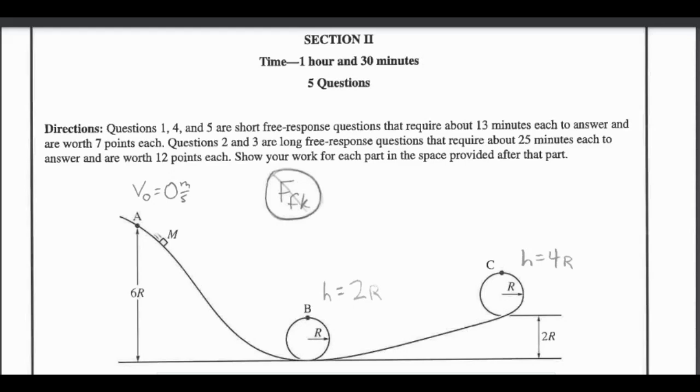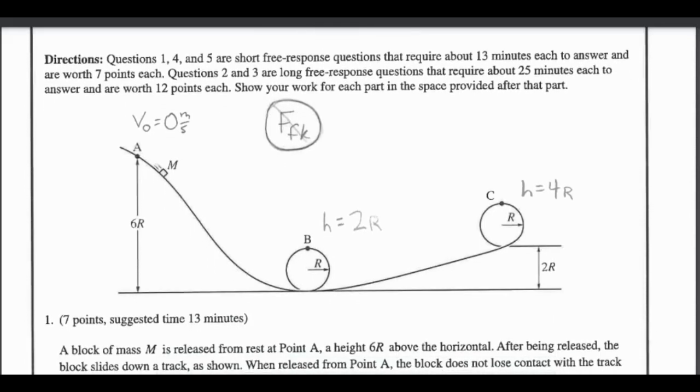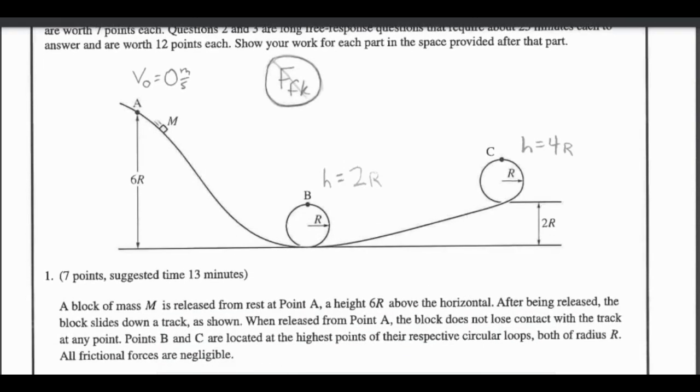For our first question we have a block of mass m released at rest at point A, a height of 6R above the horizontal. After being released the block slides down a track as shown. When released from point A, the block does not lose contact with the track at any point. Points B and C are located at the highest points of their respective loops, both of radius R. All frictional forces are negligible.